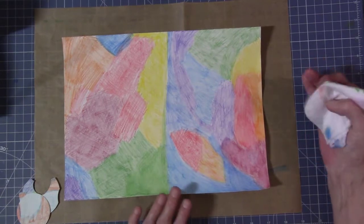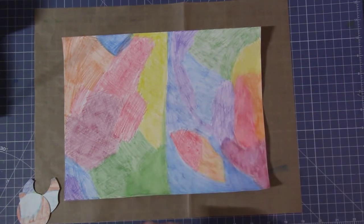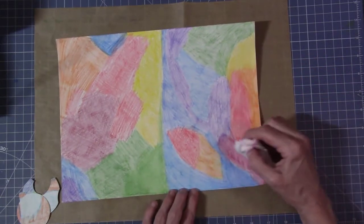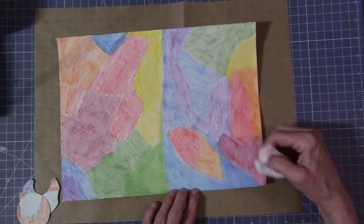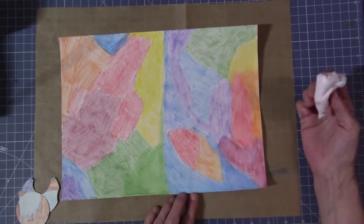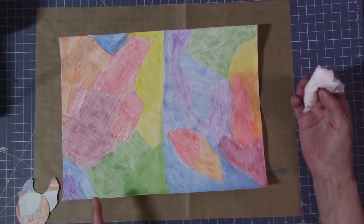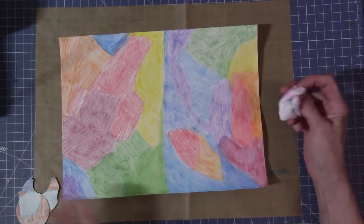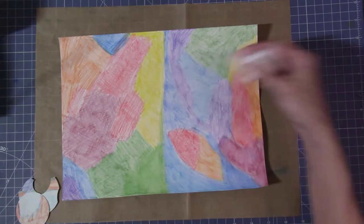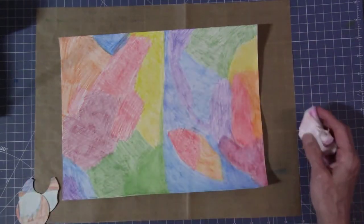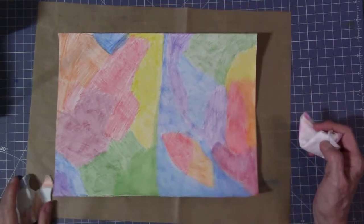And then during that video, I took the baby wipe and I rubbed this and it smoothed it out. And I was like, oh, that's cool. So this video, I am going to smooth out this chicken scratch that you see and see if I can do it.